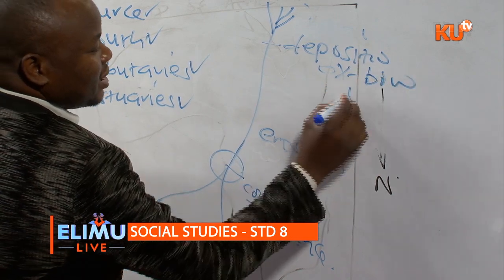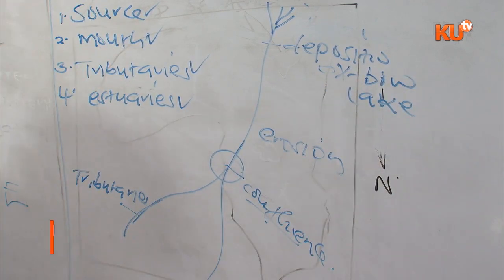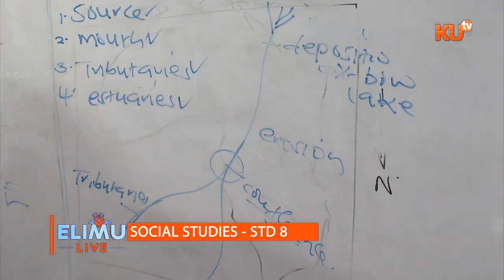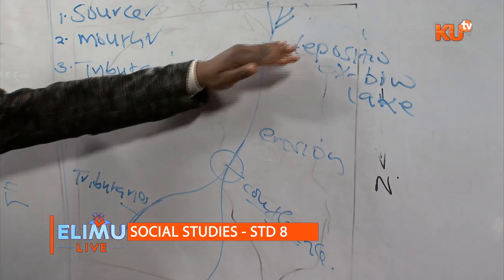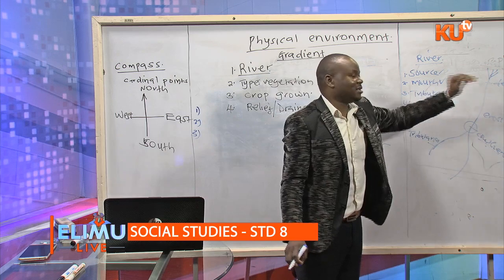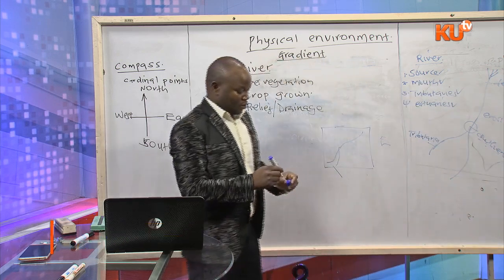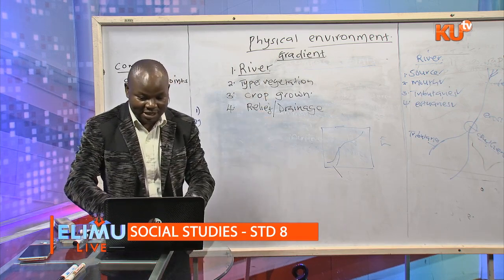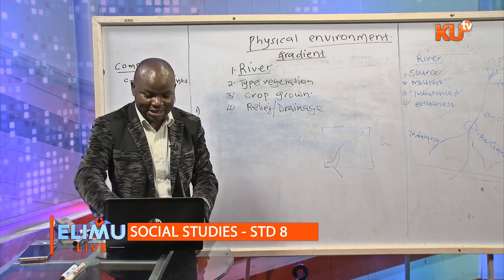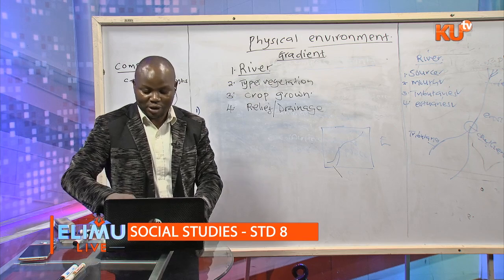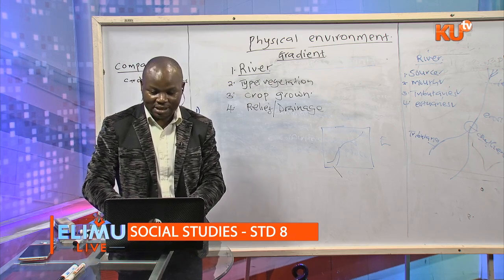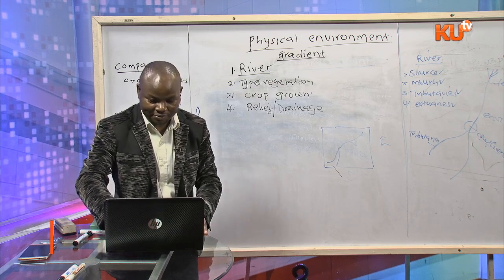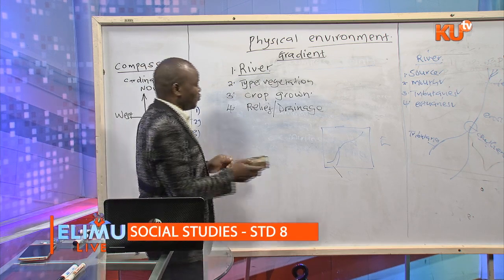A river has three stages: the youthful stage at the source, the middle stage, and the old stage at the mouth. These features and stages summarize what a river entails. Let me take you through some areas that will help learners ready to sit for KCPE.